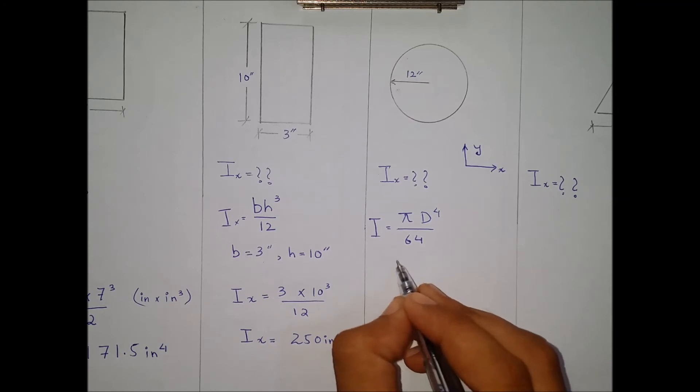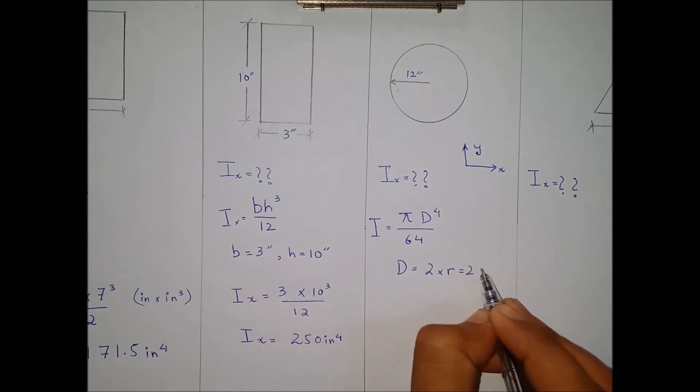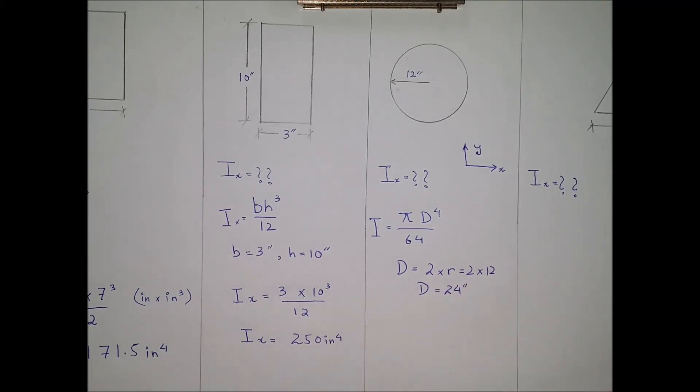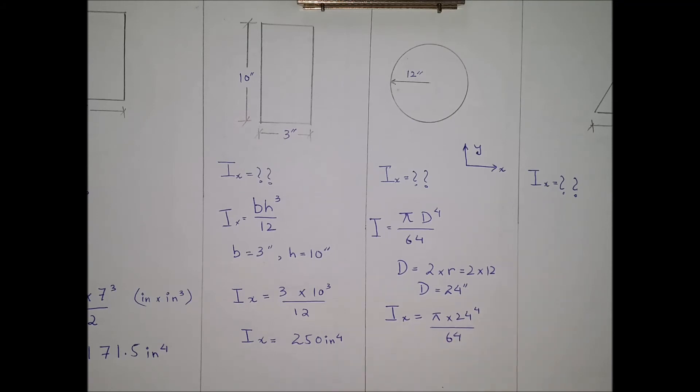The diameter in this case will be twice the radius. The radius is given as 12 inches, so the diameter comes out to be 24 inches. Substituting the diameter's value in the given equation, the moment of inertia comes out to be 16,286 inch⁴, which is the required moment of inertia for the given shape.